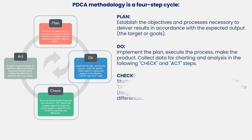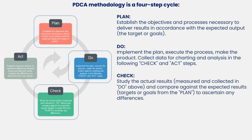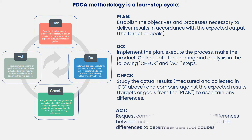In the Check phase, you study the actual results measured and collected in the Do phase previously, and compare against the expected results — the targets or goals from the Plan step — to ascertain any differences. In the Act phase, you request corrective actions on significant differences between the actual and planned results. You analyze the differences to determine their root causes.